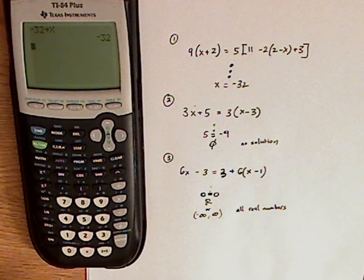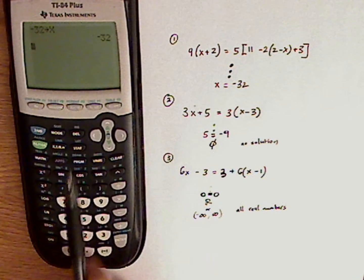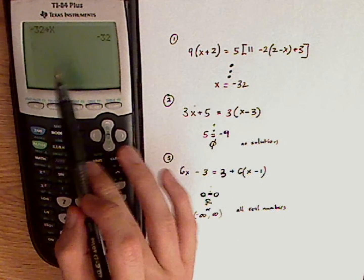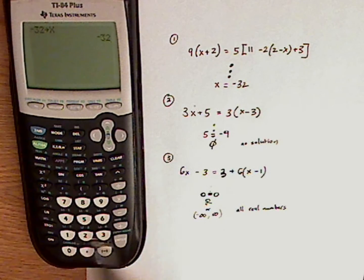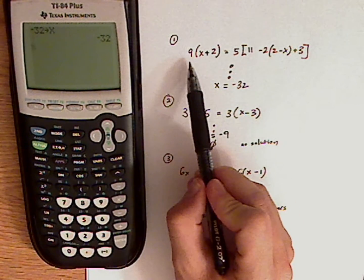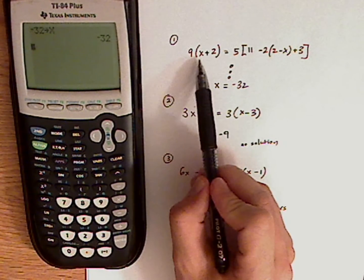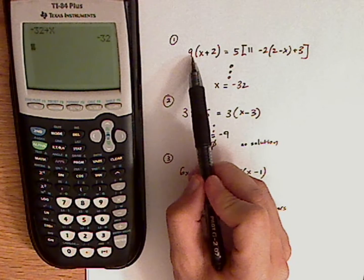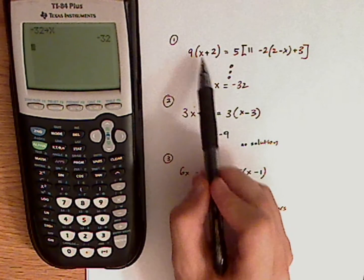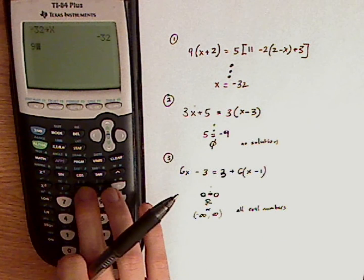And then enter. So now x in this screen is equal to negative 32. Now what I want to do next is always plug in my original. So I have this guy on top. So I'm going to push that first.